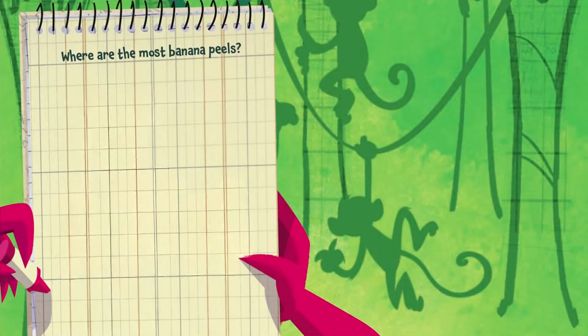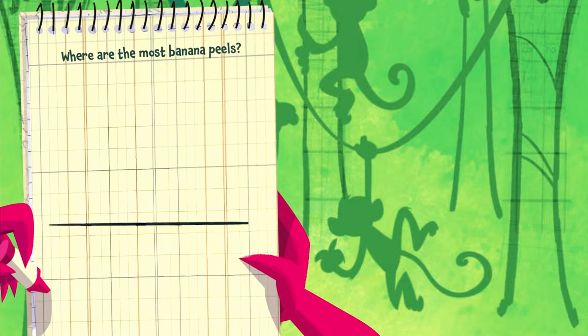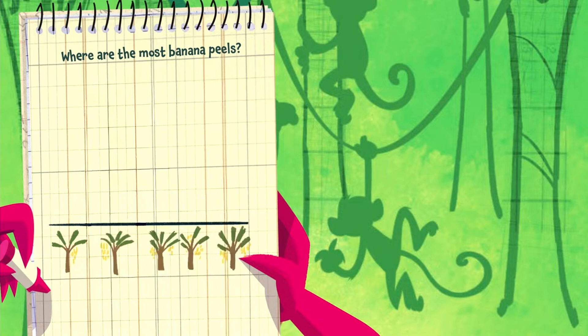The question I want to answer is: where are the most banana peels? I'll draw a line called the horizontal x-axis. There are five trees that have banana peels under them, so let's draw those next.